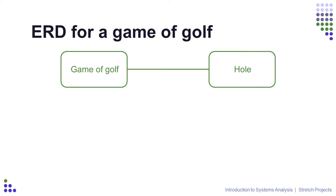Entity Relationship Diagrams technically consist of just two symbols: entities and relationships. Entities are represented by a rectangle with rounded corners, while relationships are represented by various lines. Rather than trying to explain each different type of relationship and then showing them in action, we will look at the relationships in context.